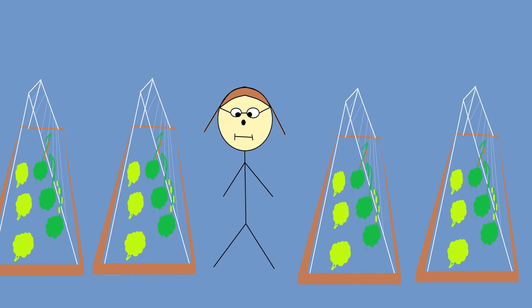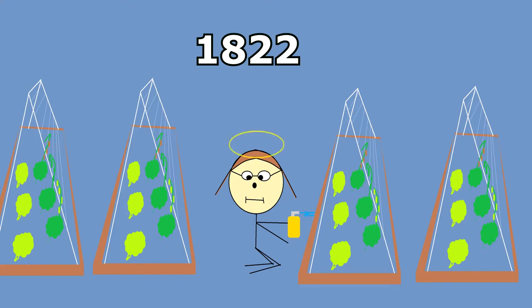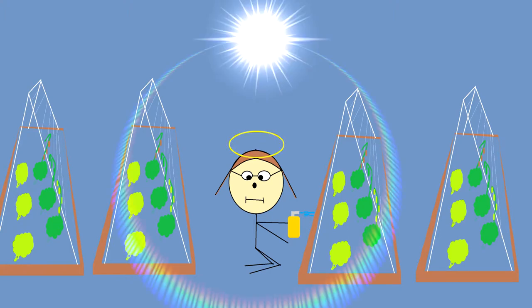Mendel was but a humble Austrian monk, born in 1822. In practicing his peaceful ways, he spent a lot of time in his monastery garden.